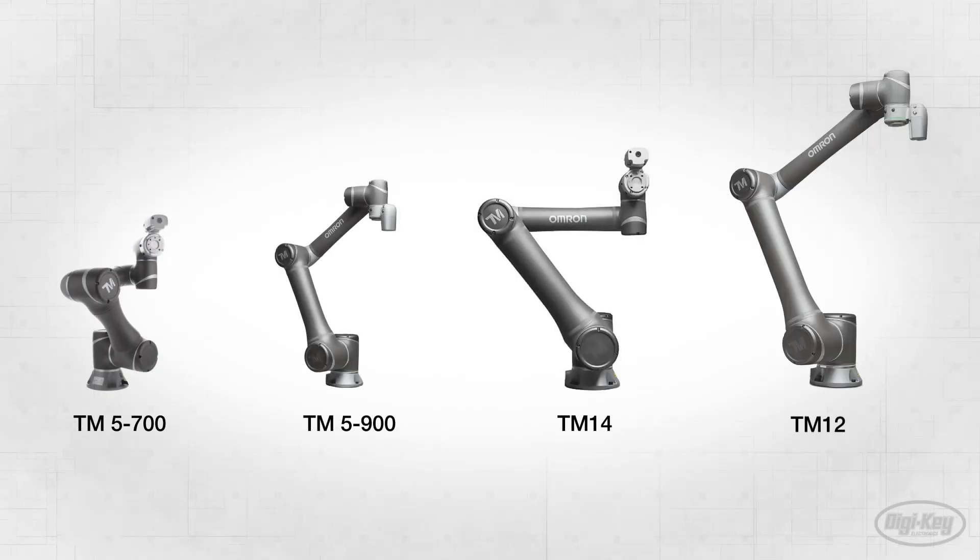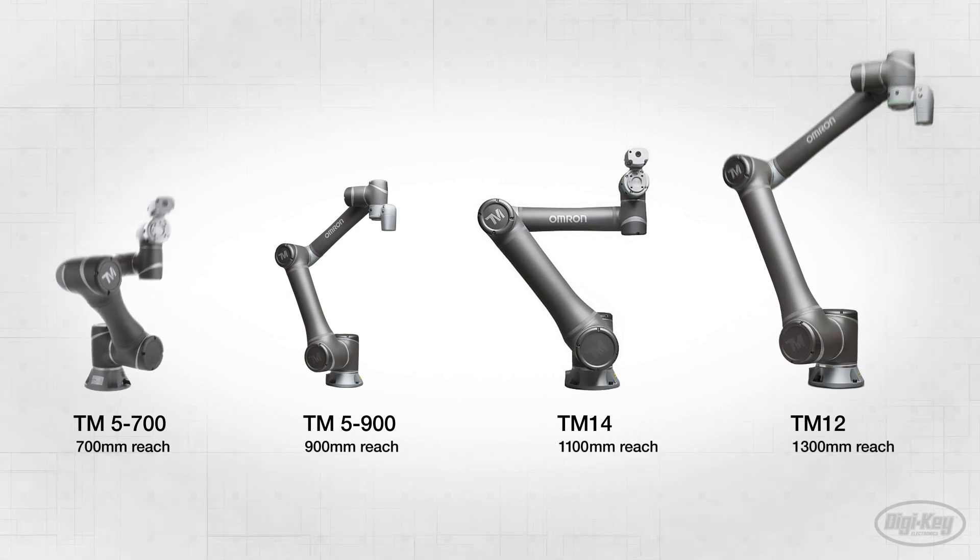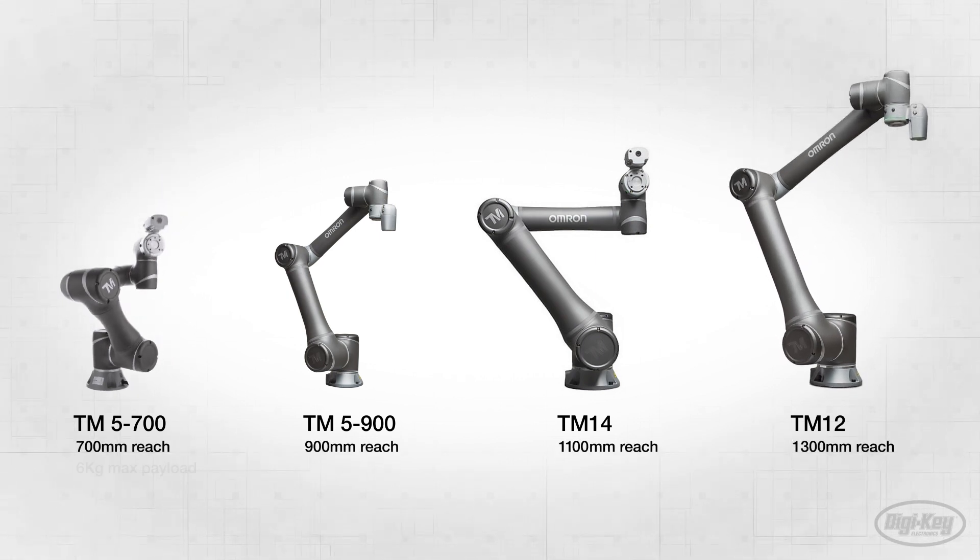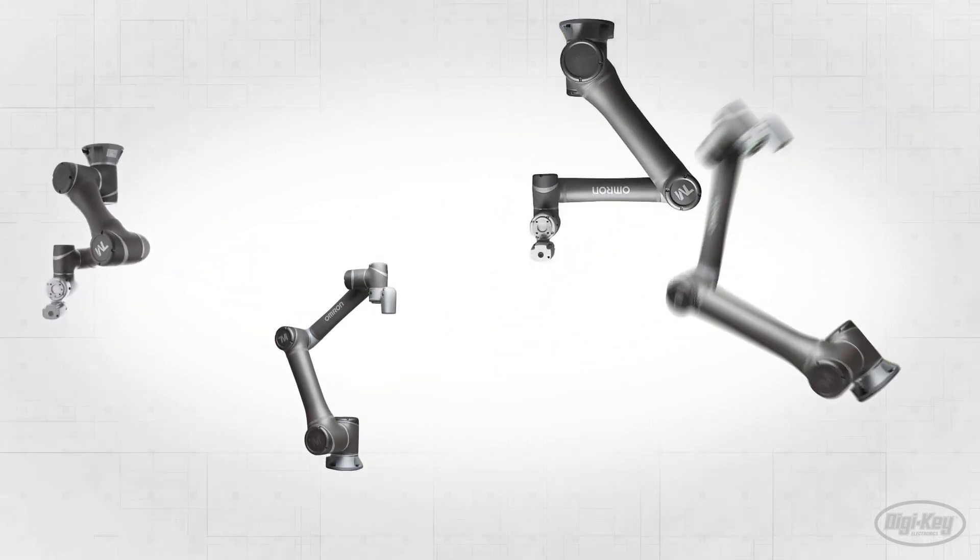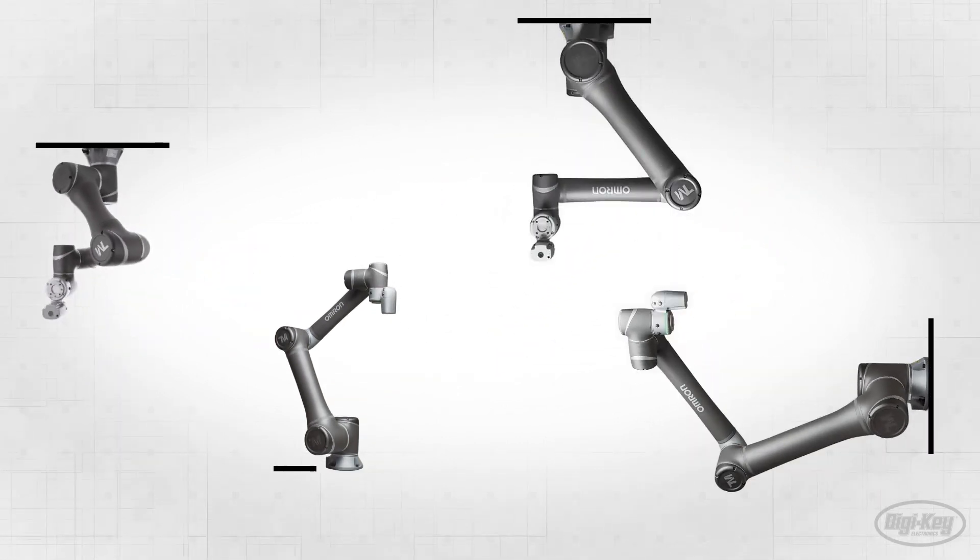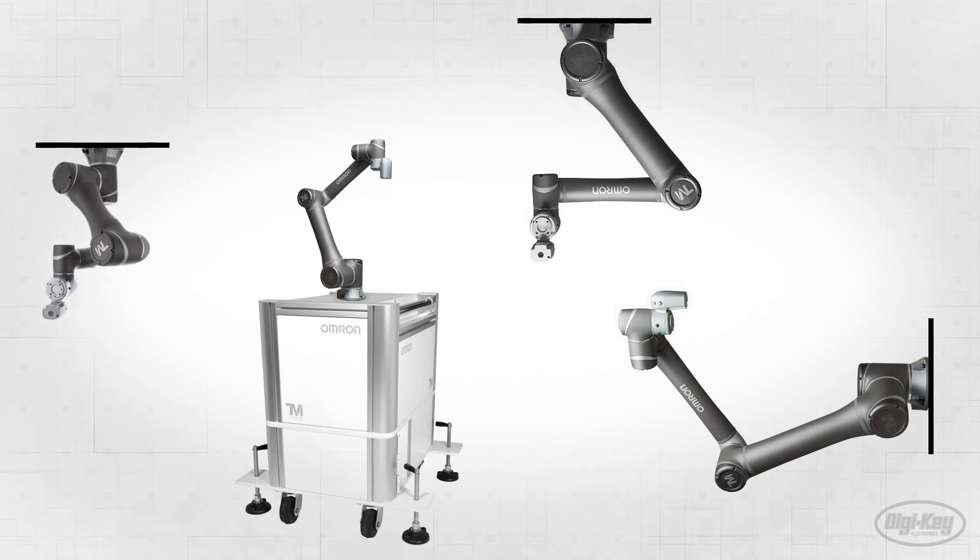Omron's TM series is available in multiple configurations, with reach ranging from 700 to 1,300 millimeters, and a maximum payload up to 14 kilograms. The co-bots can be mounted at any angle and inverted, or on a mobile workstation for easier movement.